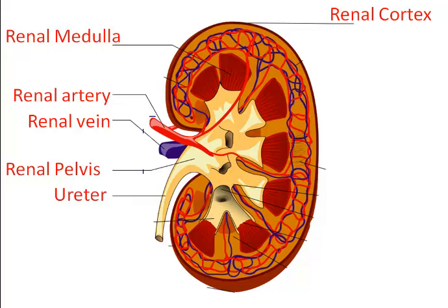The urine is then directed to the renal pelvis, a cavity for urine collection, and then moves on to the ureter. The renal pelvis is the site of kidney stone formation, which results when minerals in the urine precipitate out of the urine, forming solids or crystals. Kidney stones can result from a diet that contains excess calcium, sodium, animal protein, or vitamins, and from dehydration.